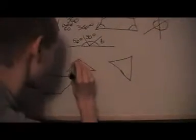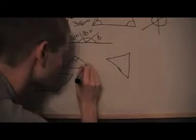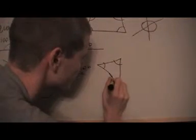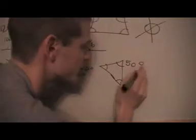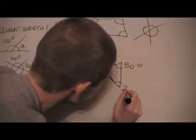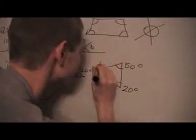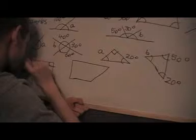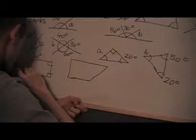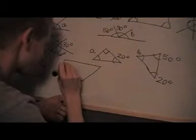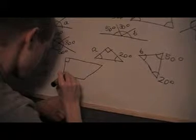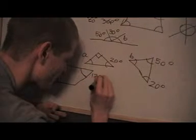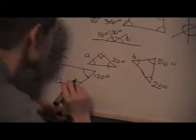Then we've got a triangle here — I'll tell you we've got a right angle and one that's 20 degrees. And another triangle where I've got one that's 50 and one that's 20 — I need to find angle B. Then I've got a quadrilateral where I've got two right angles and one that's 40 degrees — I need to find angle A. And this one here has one right angle, another right angle, and one that's 120 — I need to find angle B.